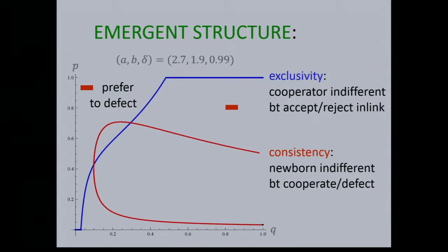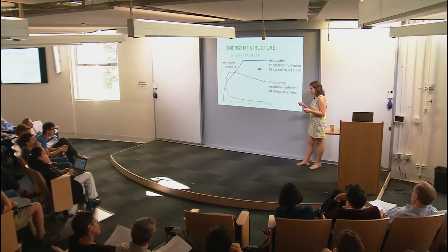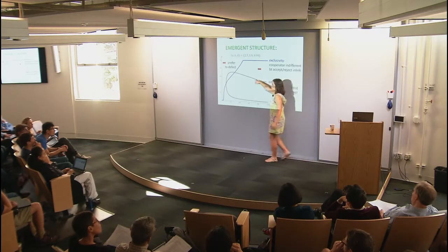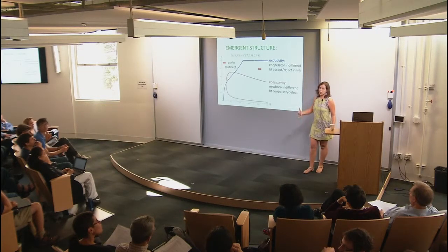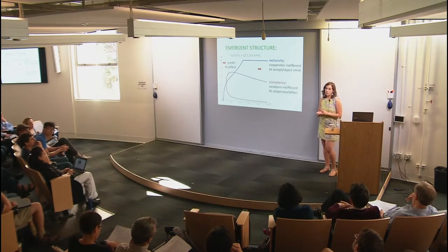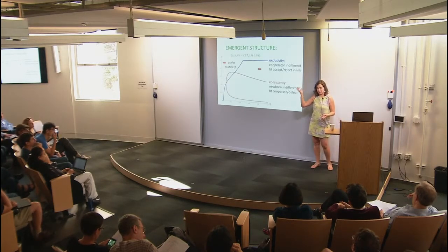If there's a lot of cooperators in the world and A is high enough, you'd prefer to defect even with maxed-out social capital. The exclusivity condition asks: when are cooperators indifferent between accepting and rejecting in-links, as a function of the proportion of in-links coming from cooperators versus defectors? If few cooperators exist, in-links come mostly from defectors, so you prefer to reject. If many cooperators exist, in-links come largely from cooperators since new cooperators keep arriving, so you prefer to accept.